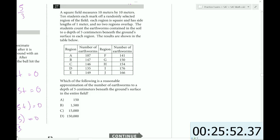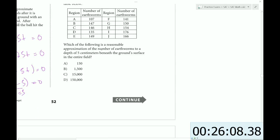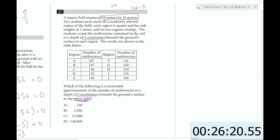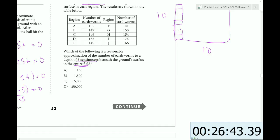A square field measures 10 by 10. 10 students each mark a randomly selected region of the field. Each region is a square and has side lengths 1 meter. No two regions overlap. The students count the earthworms contained in the soil to a depth of 5 centimeters beneath the ground surface. Results are shown. Which of the following is a reasonable approximation of the number of earthworms to a depth of 5 centimeters beneath the ground surface for the entire field? So they only sampled part of the field, not the whole thing. It's a 10 by 10 field. So let's just map it out here. 10 by 10. And what they did was 1 by 1 sections. So they did 10 1 by 1 sections, which basically means they did 1 column. They did 1 column, so they did 1 tenth of the field.